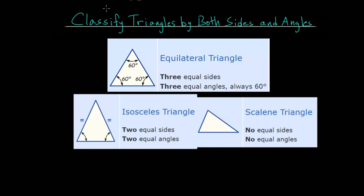In this video, I'd like to talk about classifying triangles by both their side lengths and by their angles. So let's start with their side lengths. We have three main types of triangles: the equilateral triangle, the isosceles triangle, and the scalene triangle.